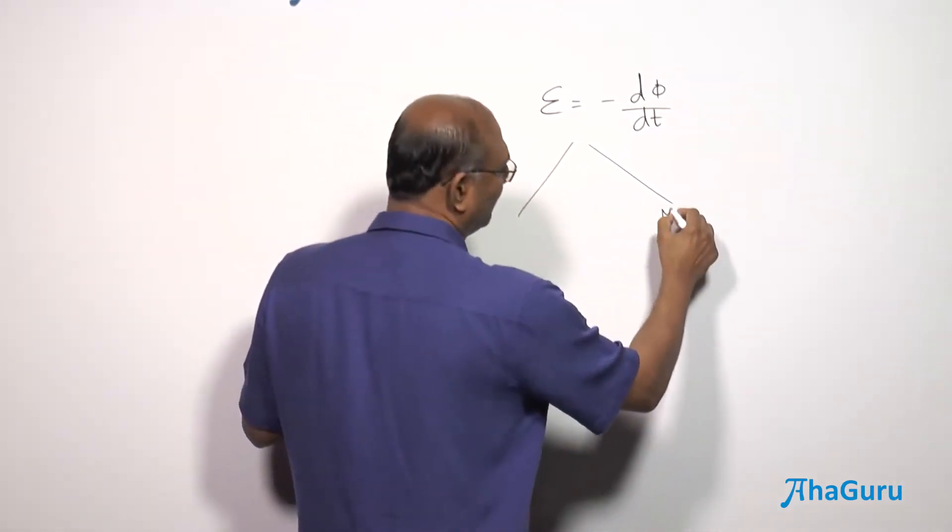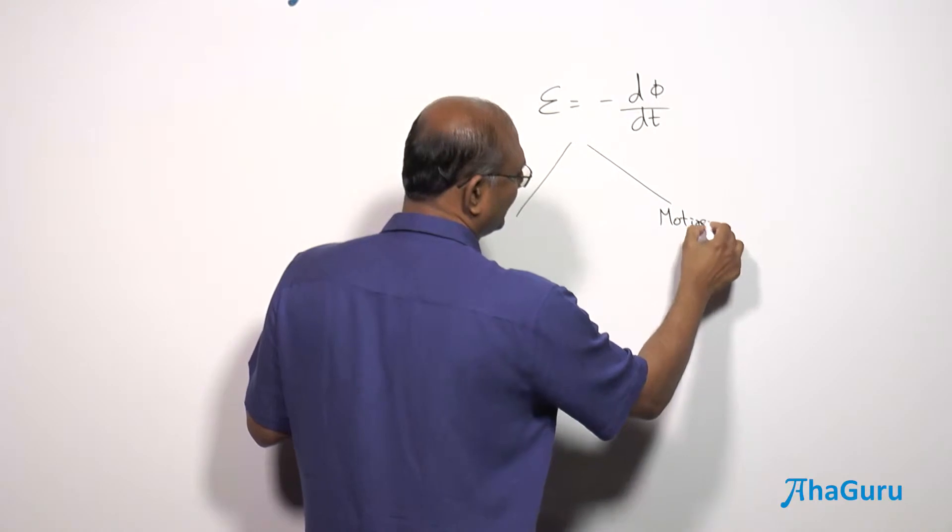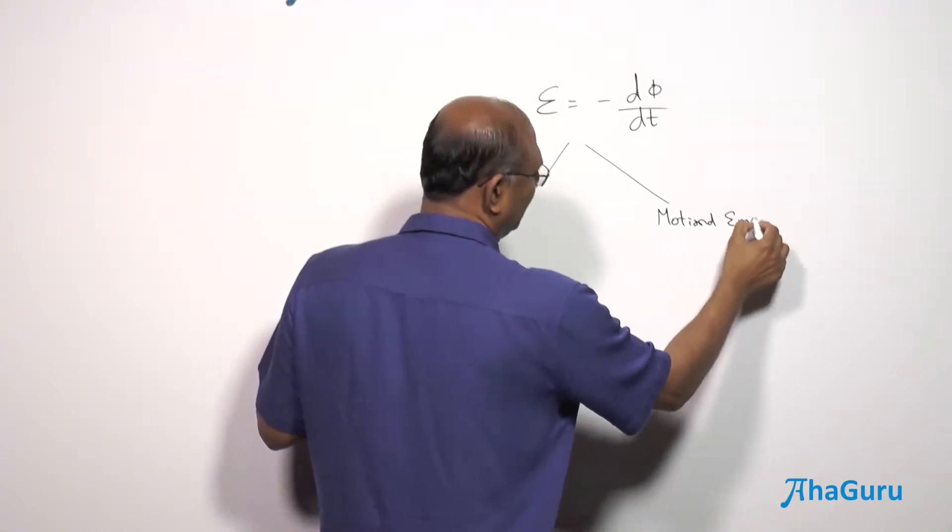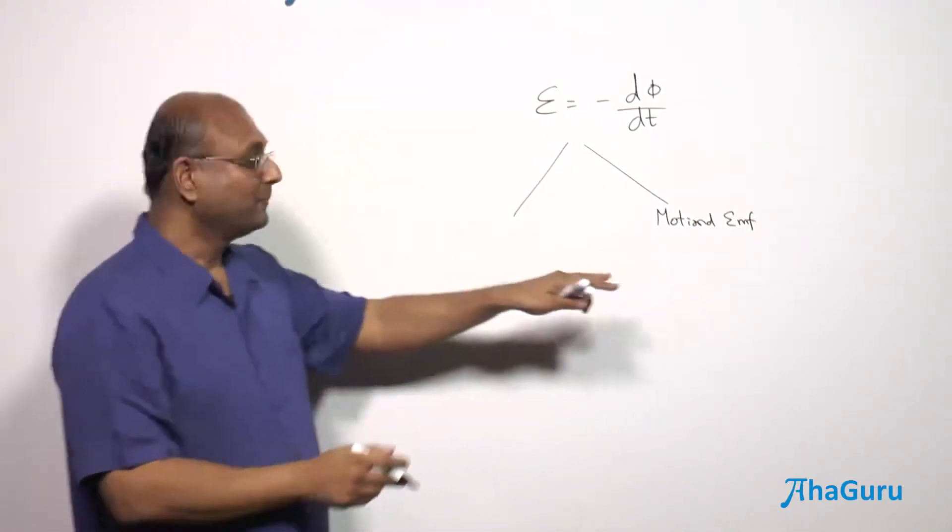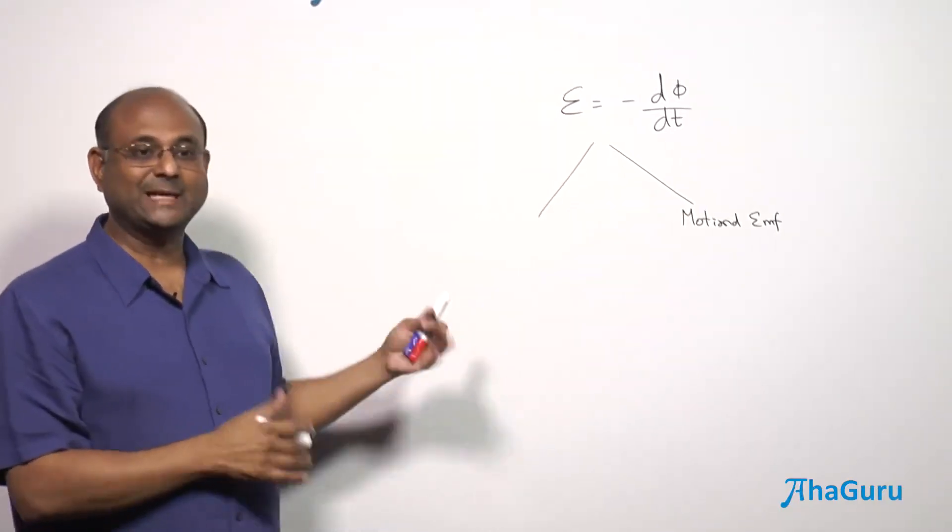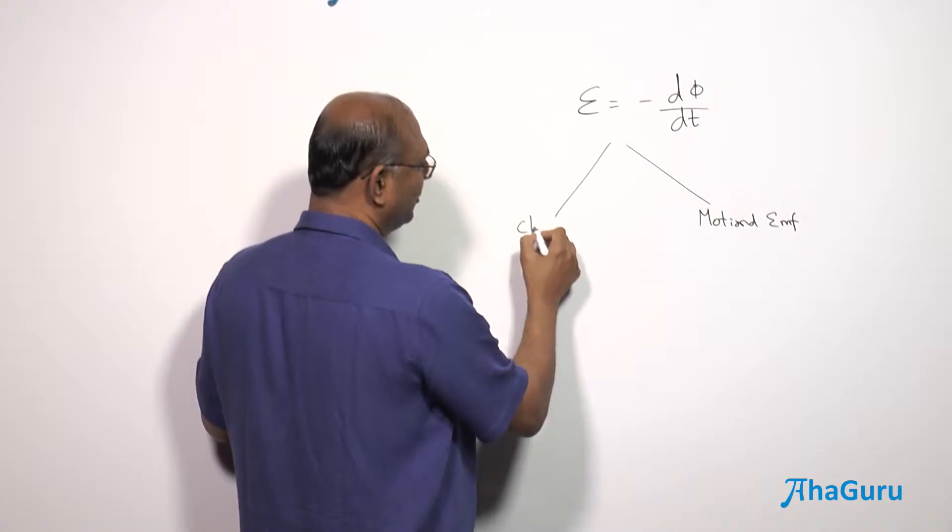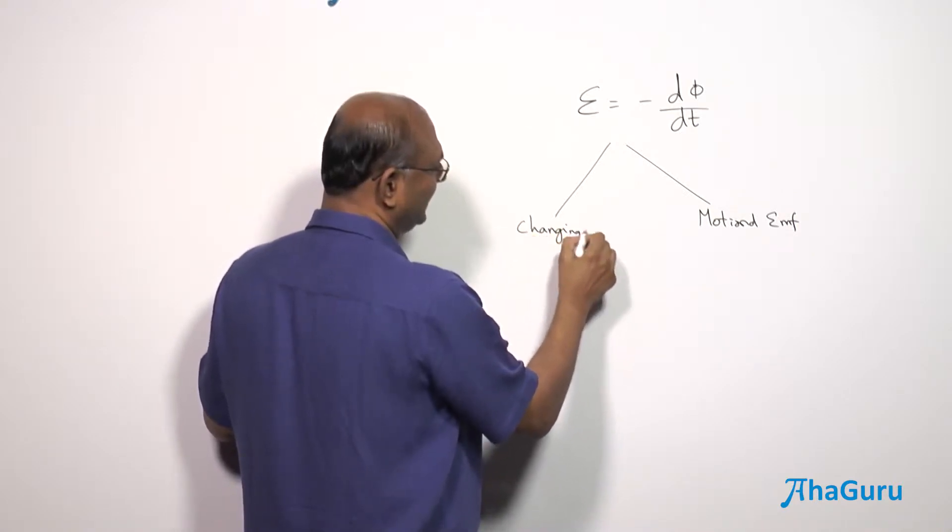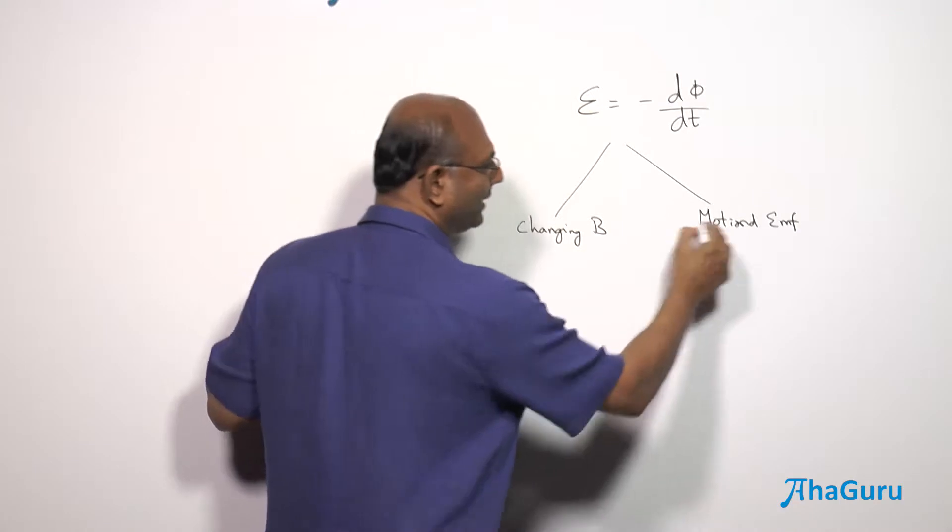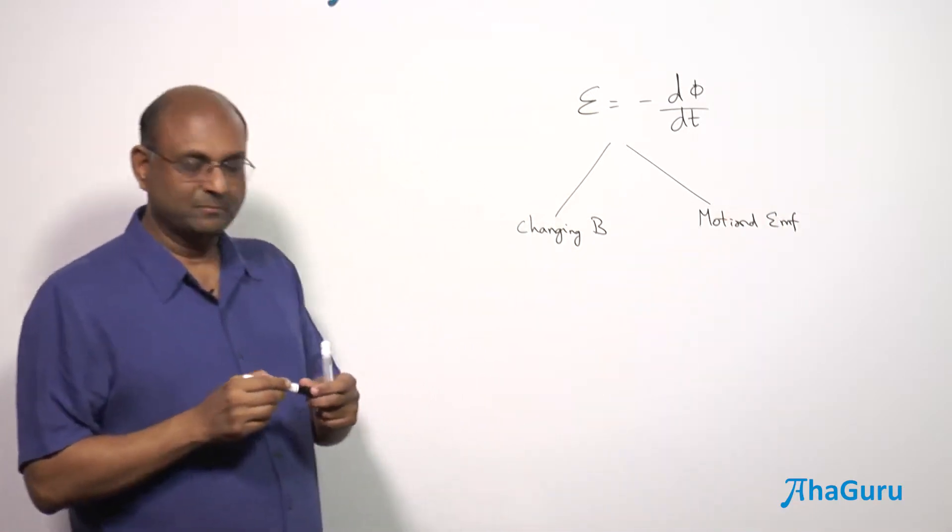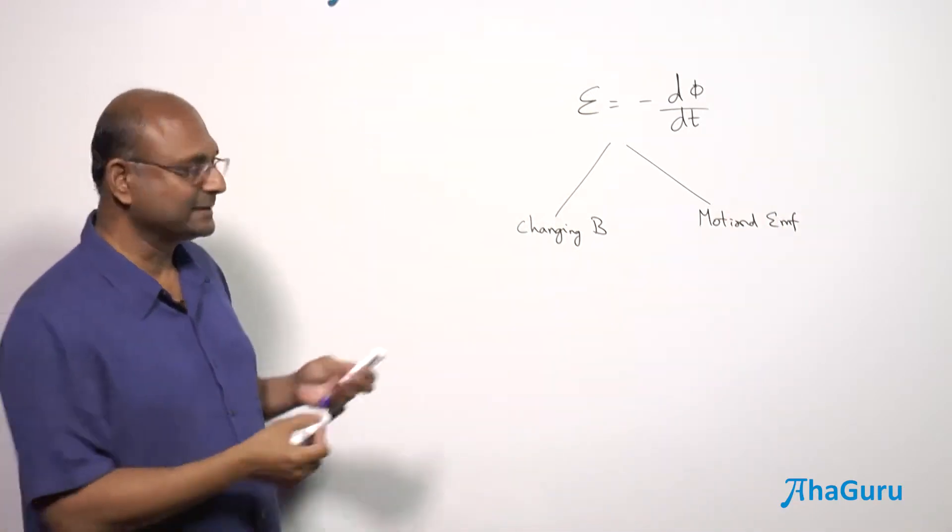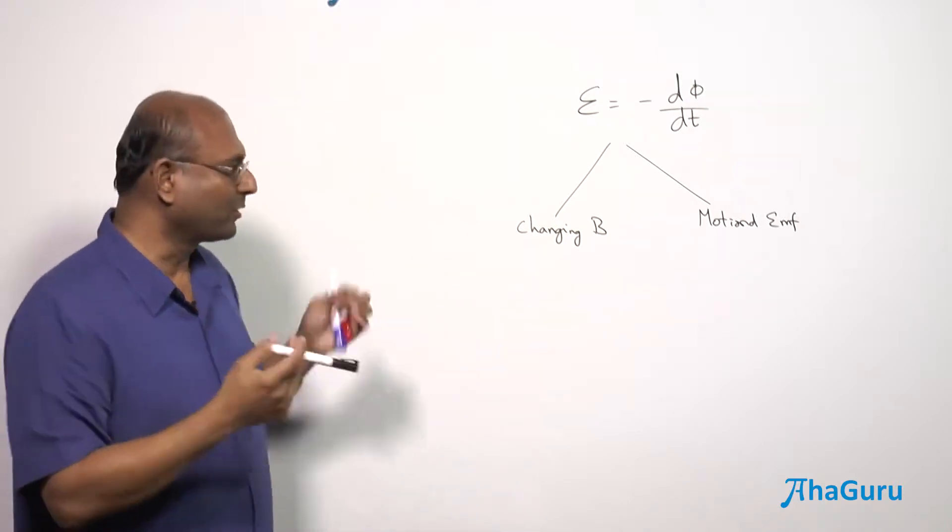One is what we call motional EMF. And in the previous problem, we saw how that combined motion with the changing magnetic field. But there are really two different ways this happens. One is where there is a change in the magnetic field and one when there is motion of a conducting rod or a loop or whatever.